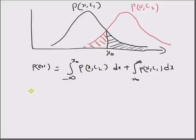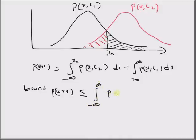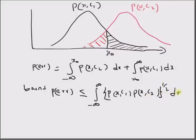Our goal is now to prove the bound on this probability of error. This probability of error is always less than the integral from −∞ to +∞ of √(p(x, c1) · p(x, c2)) dx. So this is our goal — to prove this theorem.